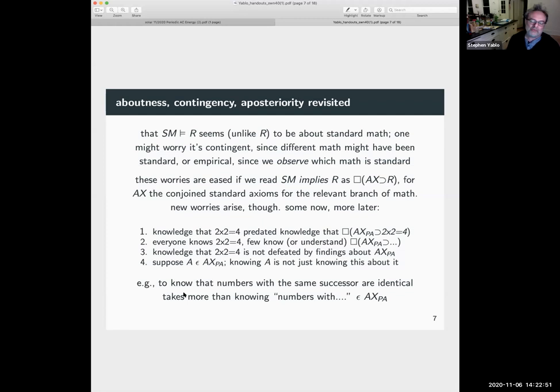And then there's a question about, this is a standard point, knowledge of an axiom doesn't seem like it's just knowing that that axiom is one of the axioms. So it would seem on this view that, take the axiom that numbers with the same successor are identical. It seems like my knowledge of that fact does not just reduce to the fact that it's one of the axioms of piano arithmetic.